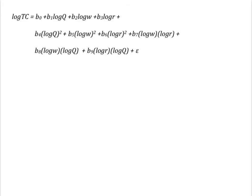Note that if all of the coefficients beyond B3 equals 0, then this collapses to a constant elasticity cost function associated with the Cobb-Douglas production function. That is, TC can be written as A, Q to the B1, W to the B2, R to the B3.